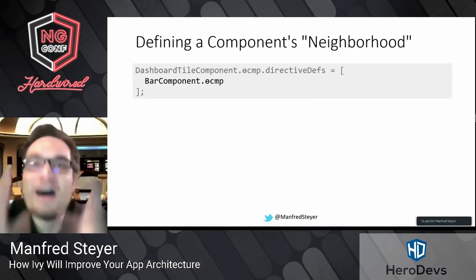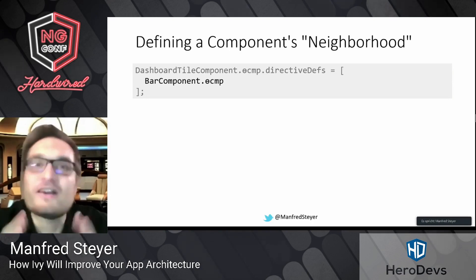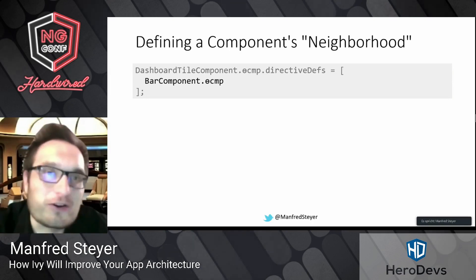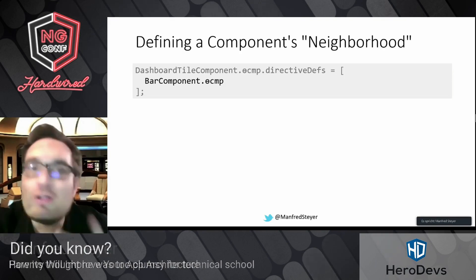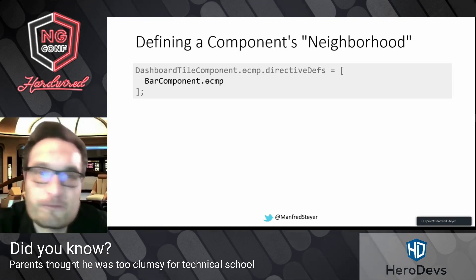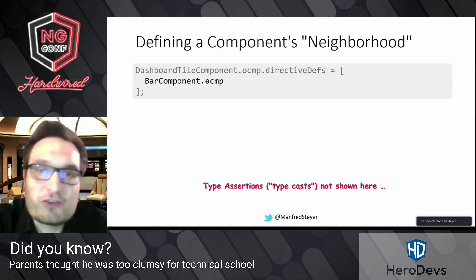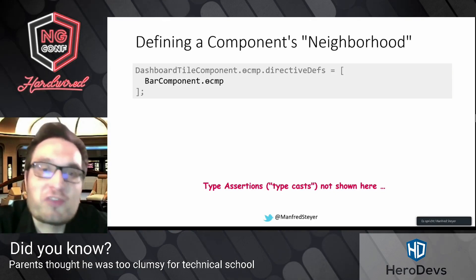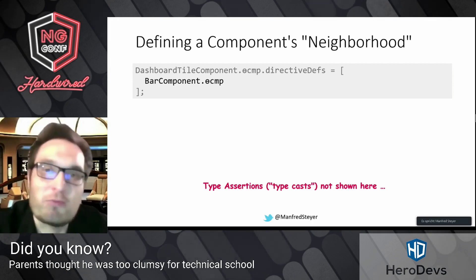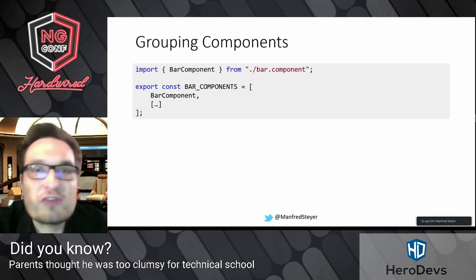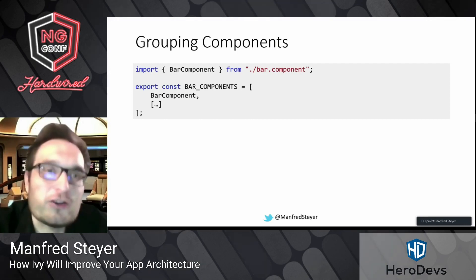Ivy at runtime doesn't need to reference your components — the compiler at compile time transports all the components into this syntax. For simplicity I've removed some type assertions on this slide; normally it would be slightly more complex. If you want to group components without an NgModule, just take an array and export it from a barrel — for instance from an index.ts file. That means your barrels, your index.ts files, will hopefully replace NgModules in the future.